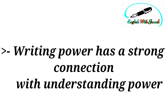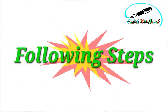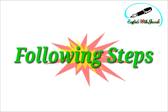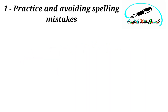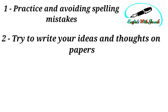The fourth and last — but not least — method is writing. Writing power has a strong connection with understanding power: the more you understand, the more you can write. The following steps can improve your writing power. Number one: there must be no spelling mistakes — this requires practice and using a dictionary time and again. Number two: always try to write your ideas and thoughts on paper; this will help you express yourself more effectively.